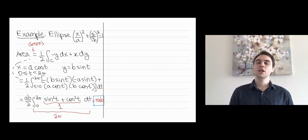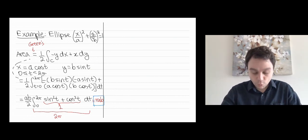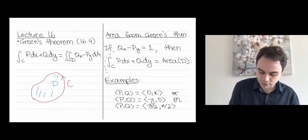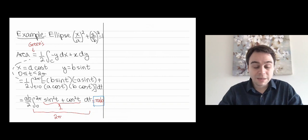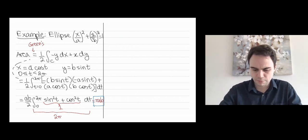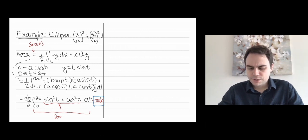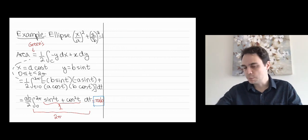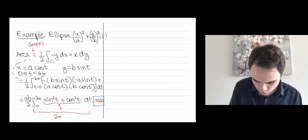It turns out we can further corroborate Green's theorem through a mechanical device historically used to compute areas: the planimeter. Nowadays more sophisticated methods exist, but you can certainly find it in museums of science. It's a mechanical device whose design is based on Green's theorem. Let's look at that device and analyze it a bit.